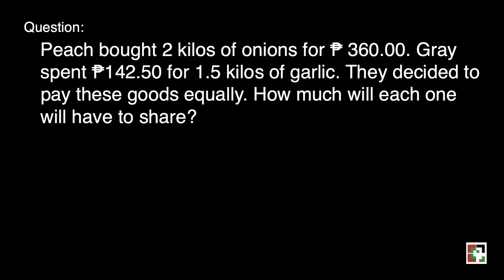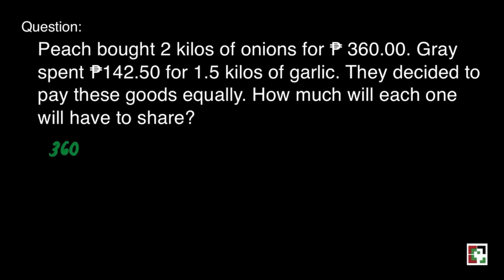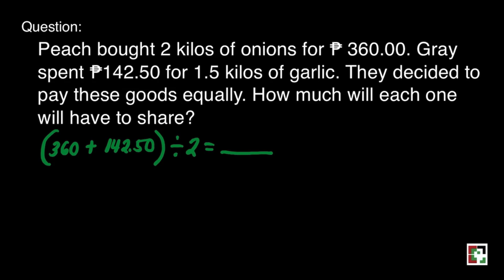Next question. Peach bought 2 kilos of onions for 360 pesos. Gray spent 142 pesos and 50 centavos for 1 and 5 tenths kilos of garlic. They decided to pay these goods equally. How much will each one have to share? Our equation will be 360 plus 142 pesos and 50 centavos, divided by 2.